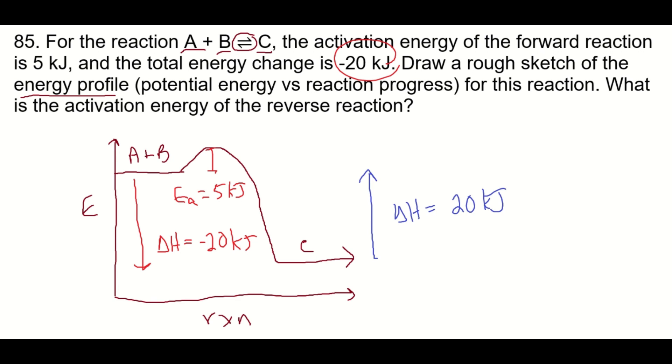Now the activation energy is from the energy of the reactant, in this case C, to the top of that activation energy hill, that barrier. So the activation energy in the reverse direction is 25 kilojoules. Because the total height of this peak from the reactants to the products is the 20 plus the 5.